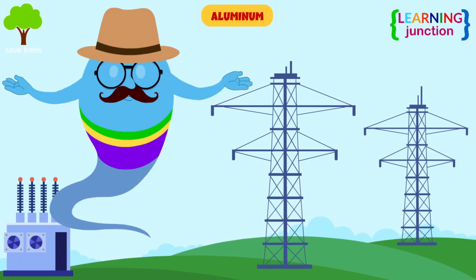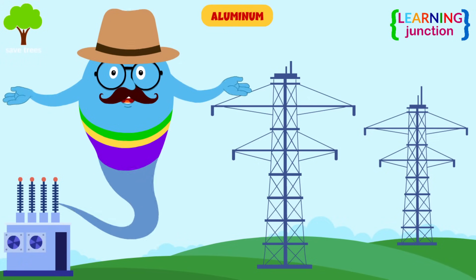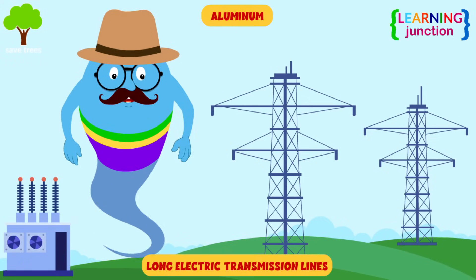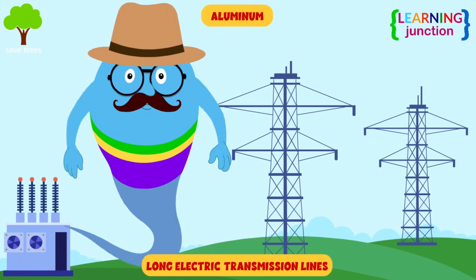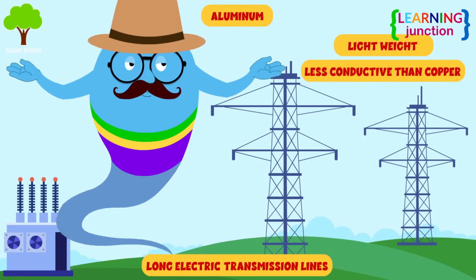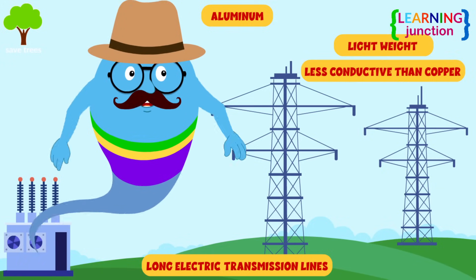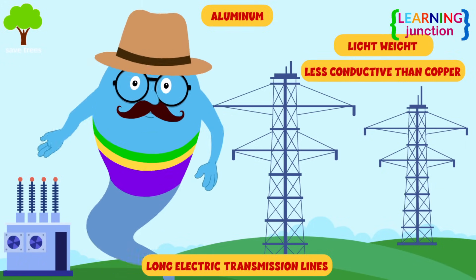Aluminum — this conductor is usually used in long electric transmission lines. Aluminum is lightweight, but about 40% less conductive than copper.